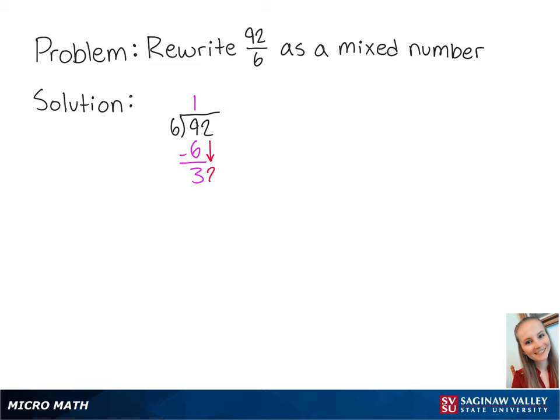Bring down the 2, and 6 goes into 32 five times. 6 times 5 is 30. We subtract 30 from 32, which is 2. So we have a remainder of 2 parts.